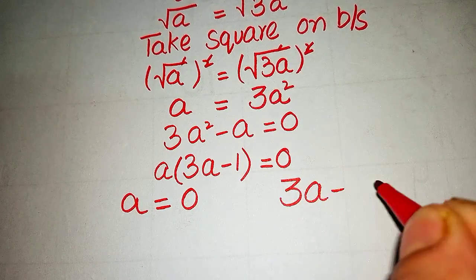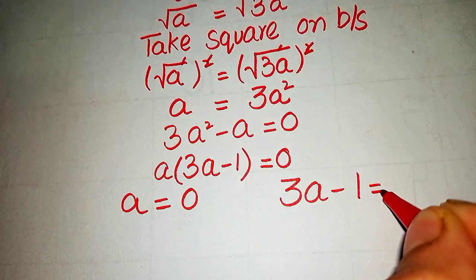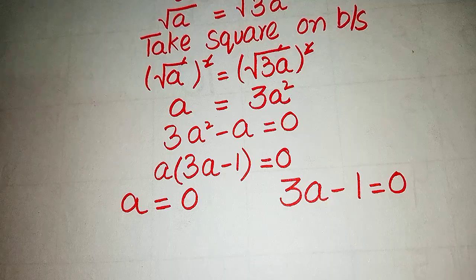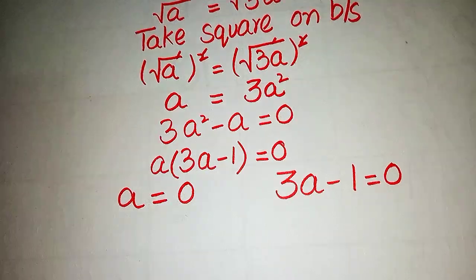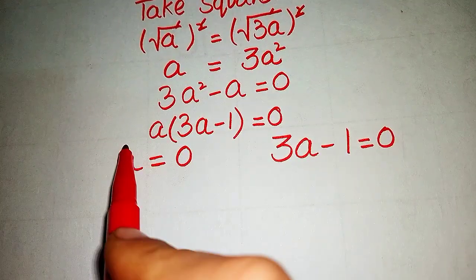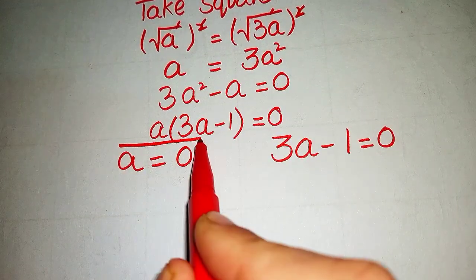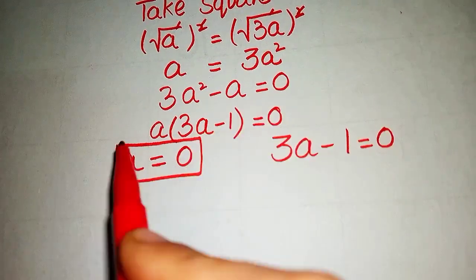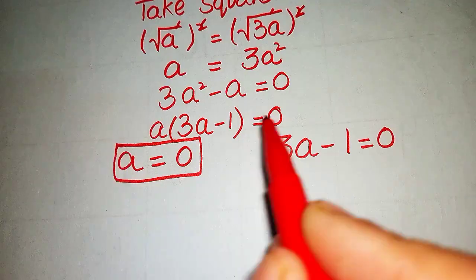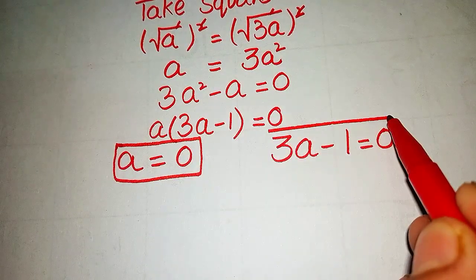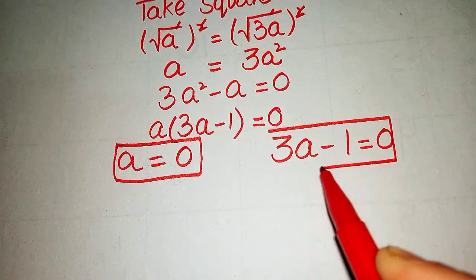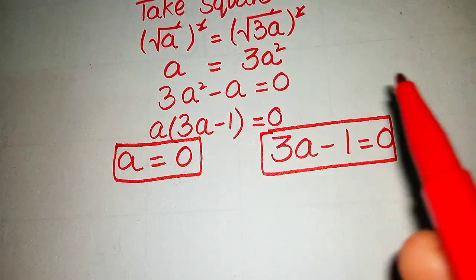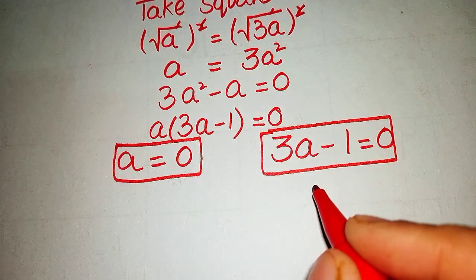We have two values: the first is a = 0, and the second comes from 3a - 1 = 0. Now we need to verify whether both values are valid solutions for our given equation.